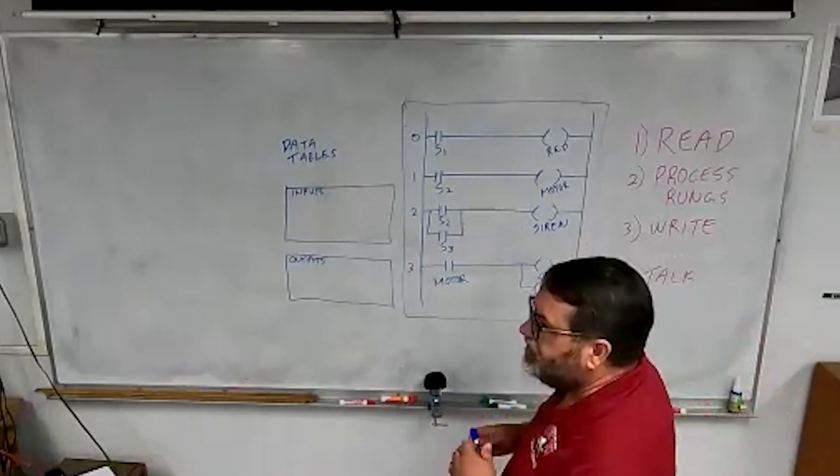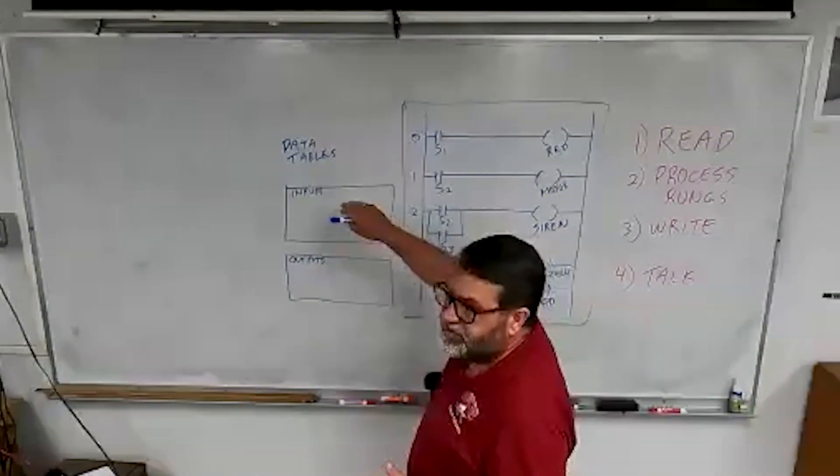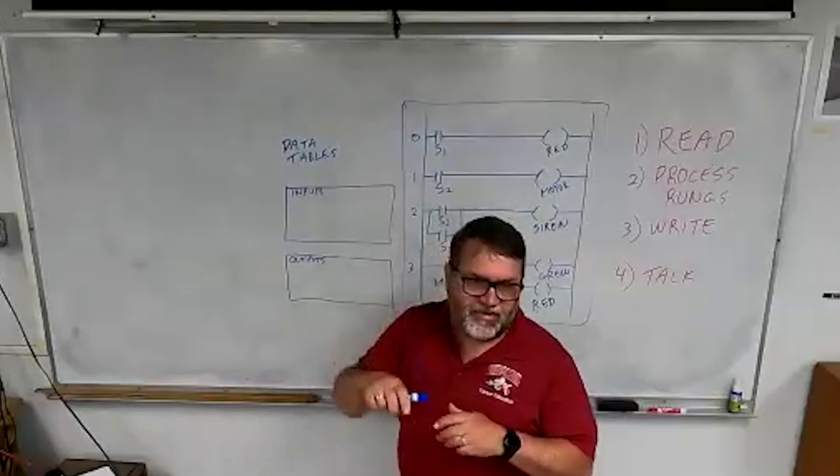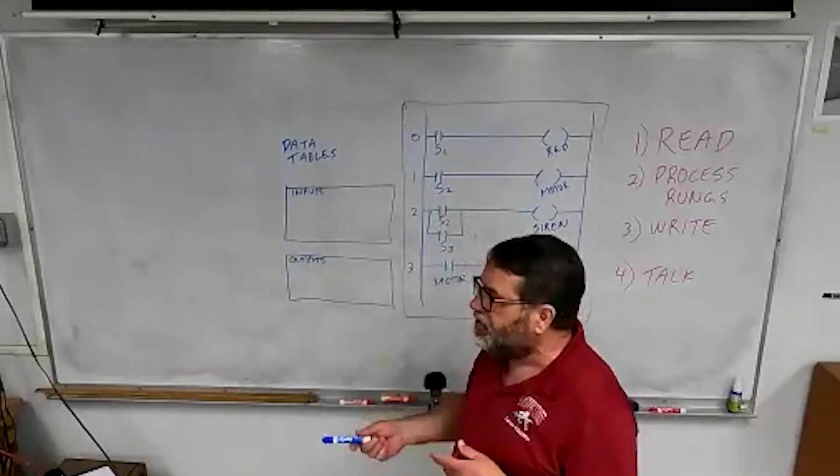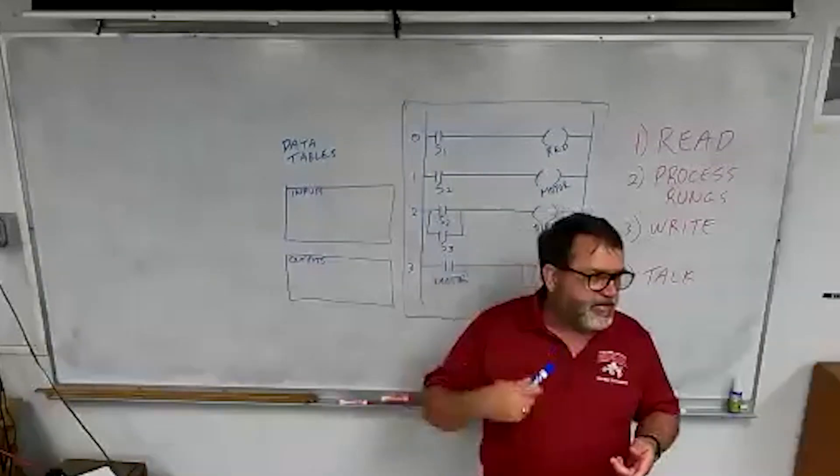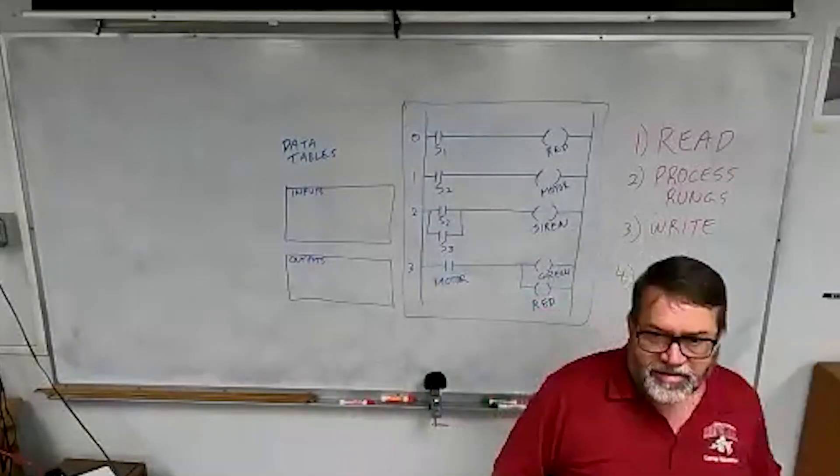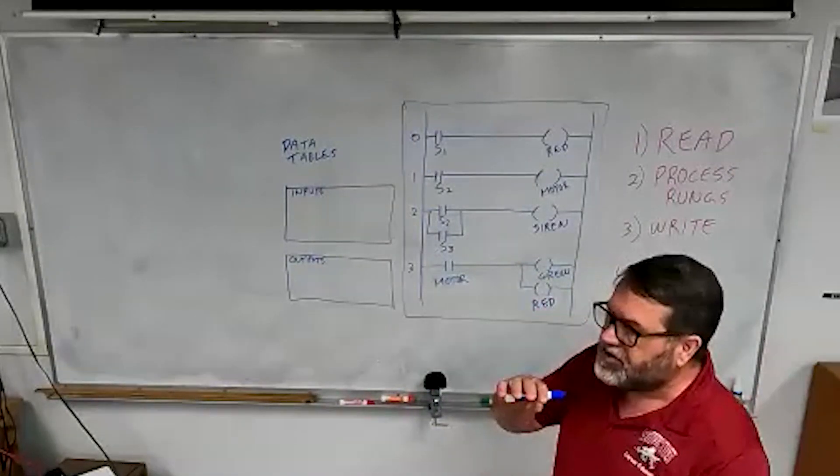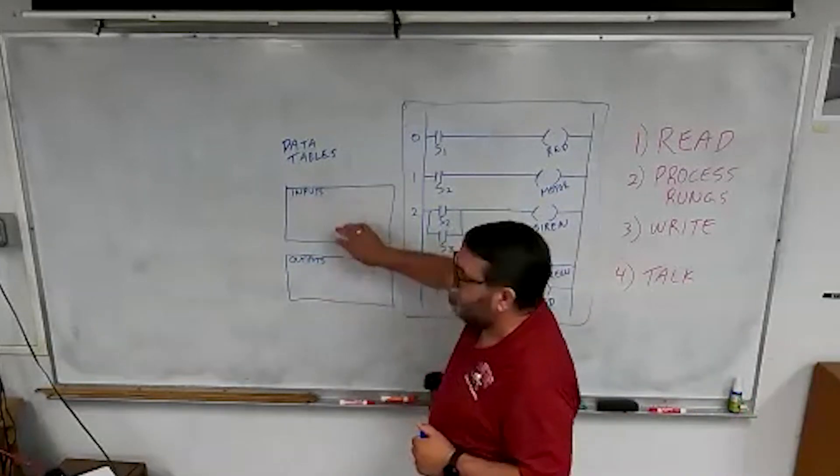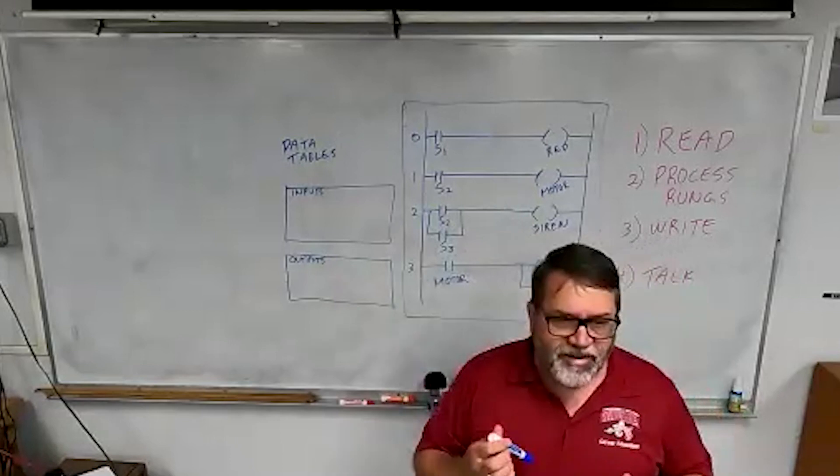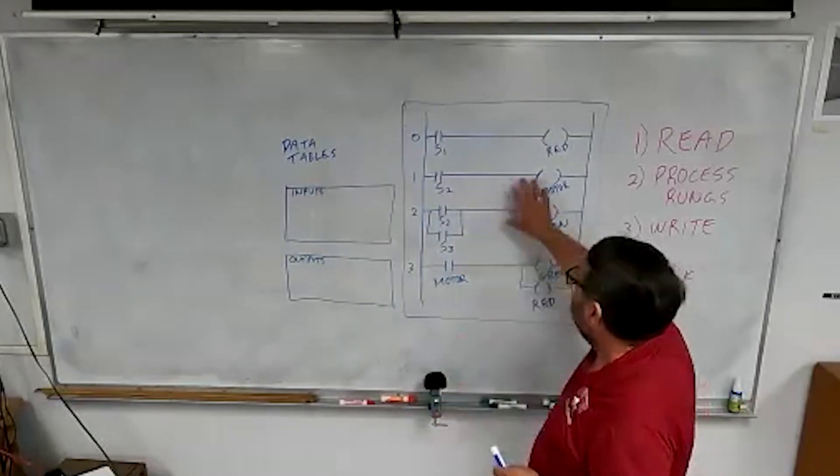Then off to the left-hand side, about halfway down on that left-hand toolbar, there's the data tables. There's the inputs and outputs, and there's timers and counters and integers, and there's a bunch of different data tables. But the main ones we're going to deal with are the inputs and outputs. So we've got our data tables, and we've got our logic.